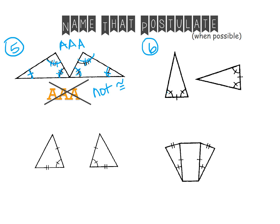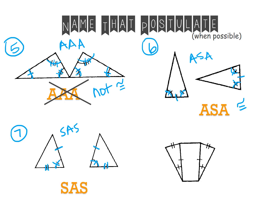In example six, I see a congruent set of angles, so I'd write an A. The next thing I see is a congruent pair of sides. And the last thing I see is another set of congruent angles. So ASA is what we would have here, and ASA does prove two triangles congruent. In example seven, I see two sets of sides congruent to each other, a set of angles congruent, and another set of sides congruent. The angle between the two sides is the included angle, so I have SAS. SAS does help to prove congruency, so these two triangles would be congruent.